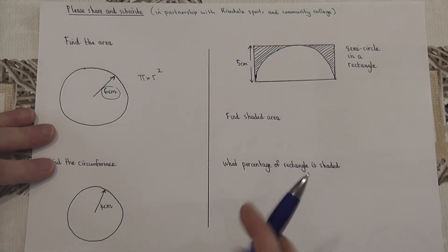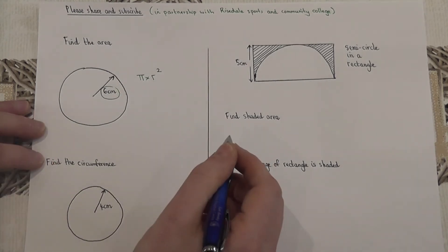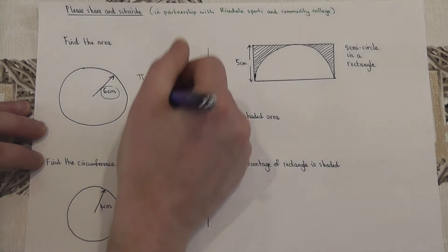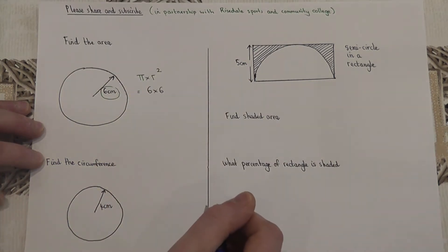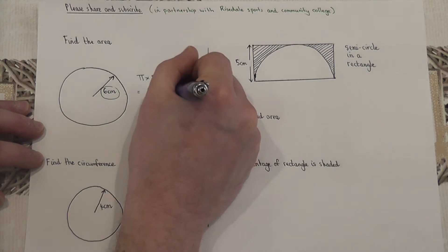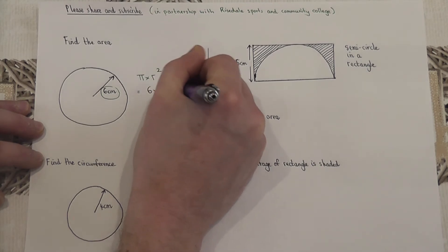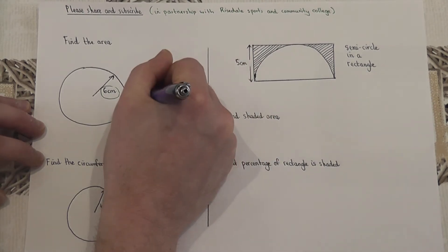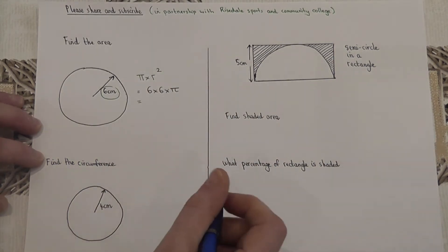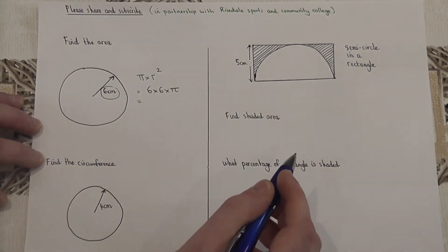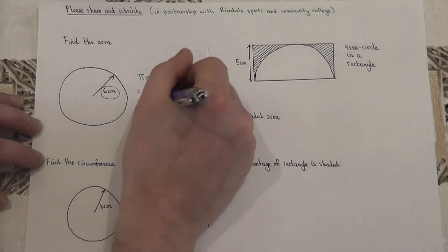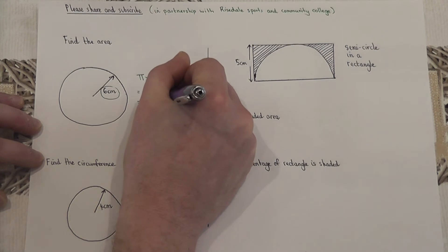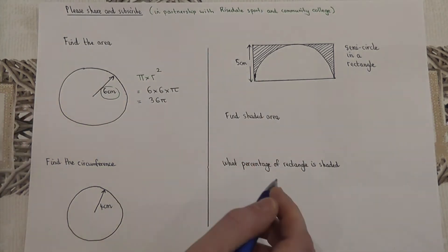Now in this case, the radius is 6, so we've got to work out what 6 squared is, or 6 times 6, and multiply this result by pi. If you've not got a calculator, we do 6 times 6, which is 36, and then times by pi. I can write down 36π to denote this.